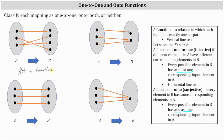Looking at the next mapping on the right, notice every input has exactly one output, so we do have a function. Focusing on the elements in B: the first element in B has one corresponding input in A, and the second element in B has two corresponding inputs in A. Because the second element has two corresponding inputs, the function is not one-to-one, since every element in B must have at most one. However, this is an onto function because every element in B has at least one corresponding input in A — having one or two inputs does meet that requirement.